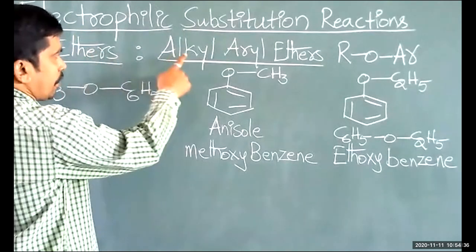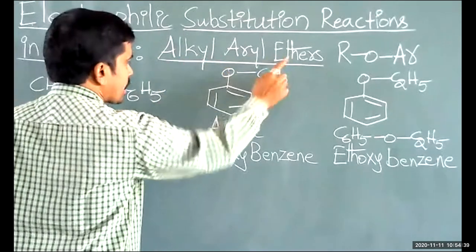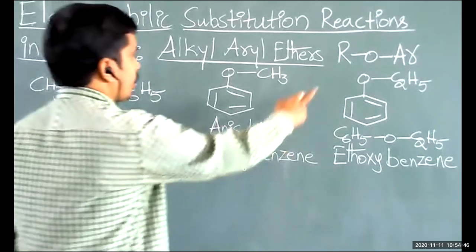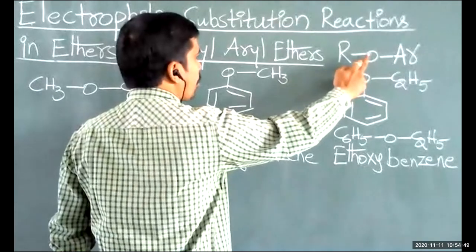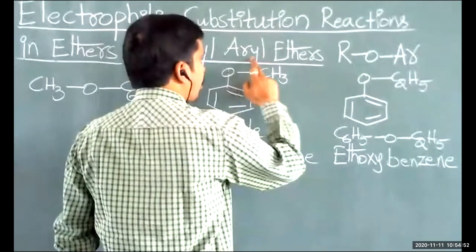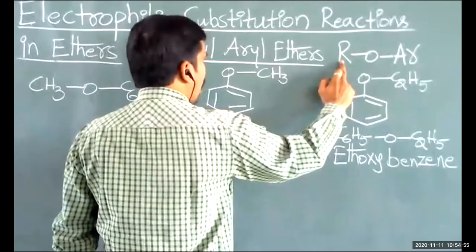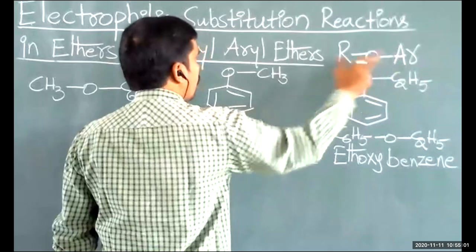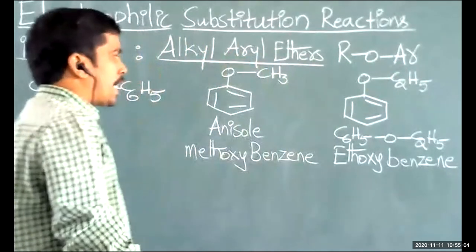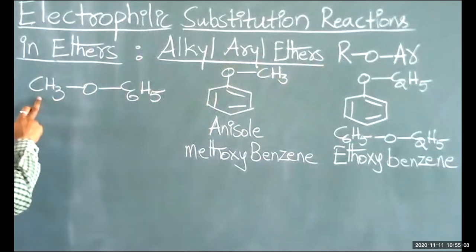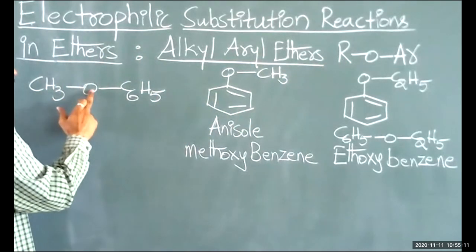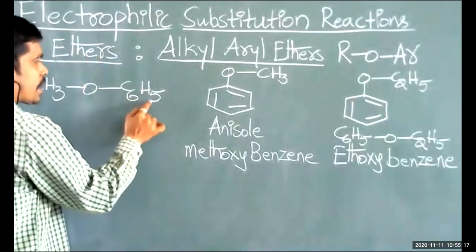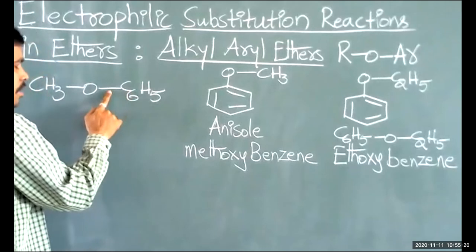Here we consider alkyl aryl ethers. The general representation is R–O–Ar, where R is the alkyl group and Ar is the aryl group. These are examples of mixed ethers. Taking CH3 as R and C6H5 (phenyl) as the aryl group, the compound is CH3–O–C6H5.